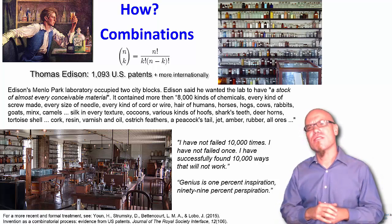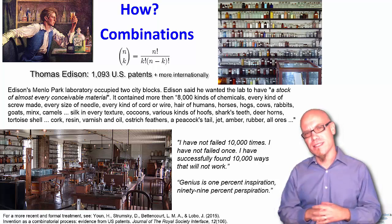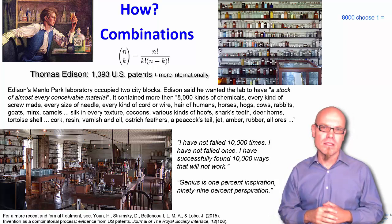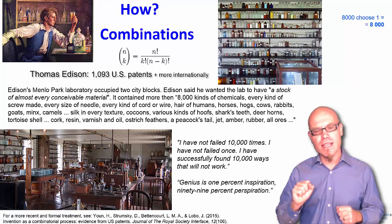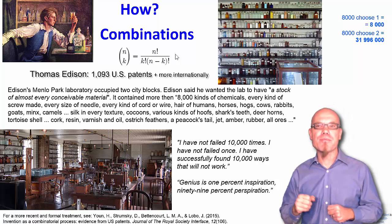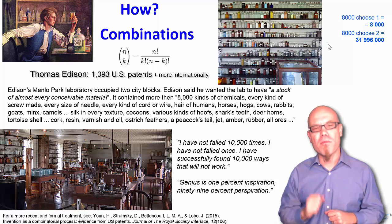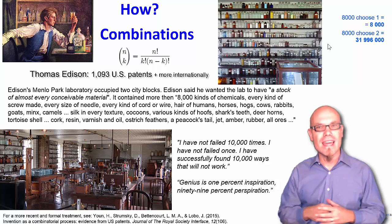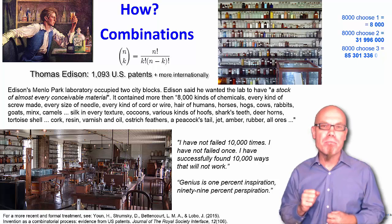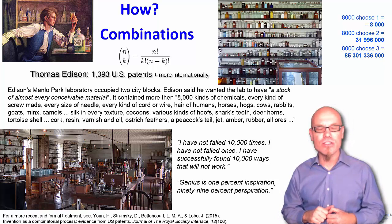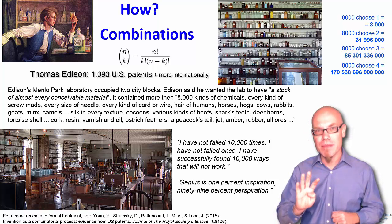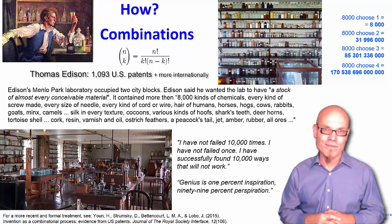Now let's have a look at how combinatorics works a little bit more. It has a lot to do with the number of choices that you have. So if we take, for example, Edison's 8,000 kinds of chemicals and we choose one kind of chemical, well, we have 8,000 choices, right? What if we say from the 8,000 chemicals we take two different ones? It turns out that if you run this little formula, the n choose k formula, you have 32 million choices of combining two different chemicals out of 8,000.